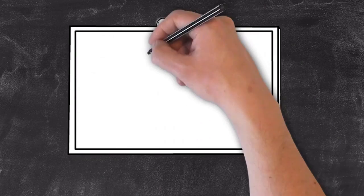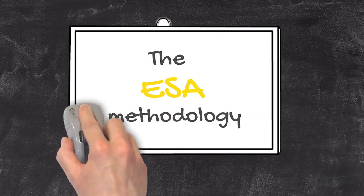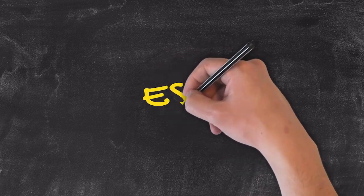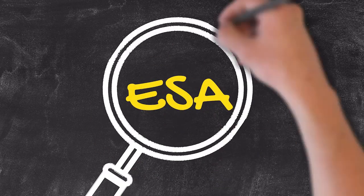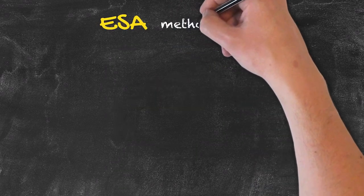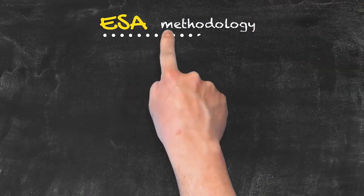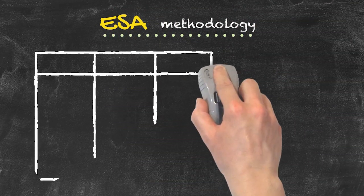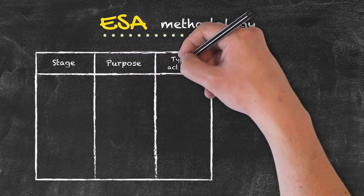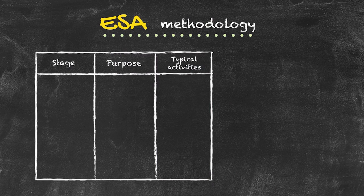This presentation is going to focus on the ESA methodology of teaching. In our teaching methodologies section, we briefly had a look at what ESA was about, but in this presentation we're going to look in greater detail about that particular methodology. This methodology is accredited to Jeremy Harmer from his Practice of English Language Teaching book. It's a three-stage methodology and we're going to look at the purpose of each one of these stages and some typical activities that take place during those stages.